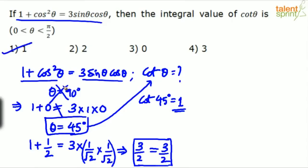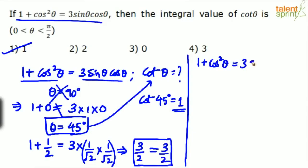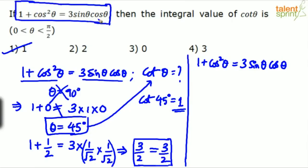Let us also look at the regular, conventional way of solving this question. The given equation is 1 plus cos squared theta equals 3 sine theta cos theta. Here it was difficult to find theta directly because a condition is imposed on theta. If there is no condition on theta, it is always easier to substitute random values. So for the conventional method, let us divide this entire equation by sine squared theta on both sides.